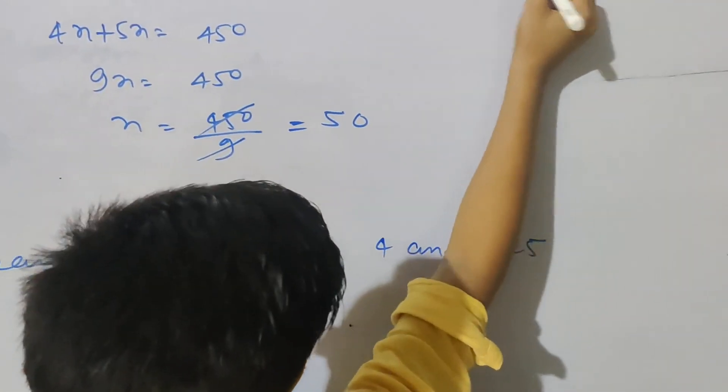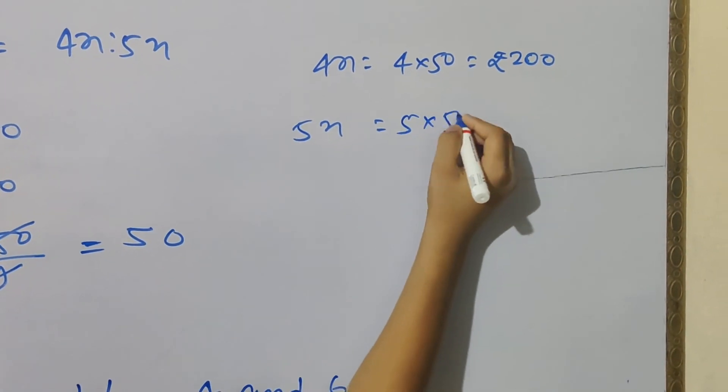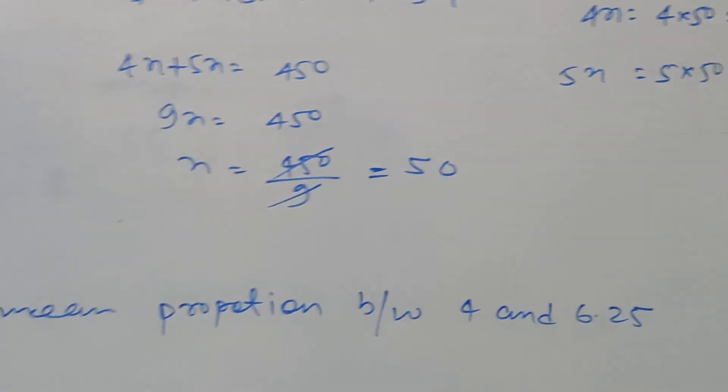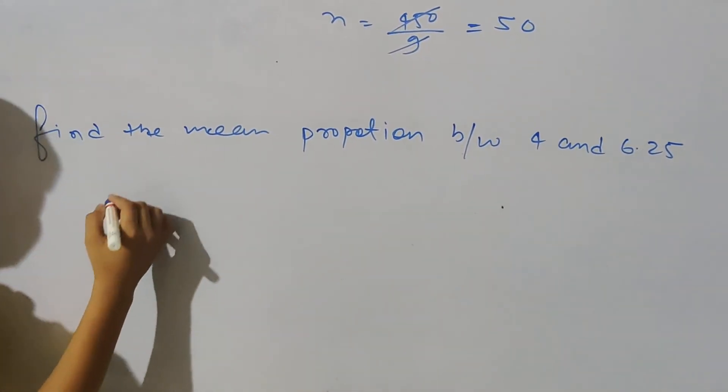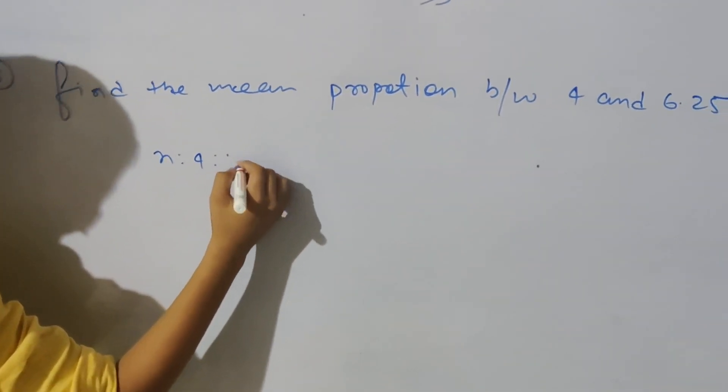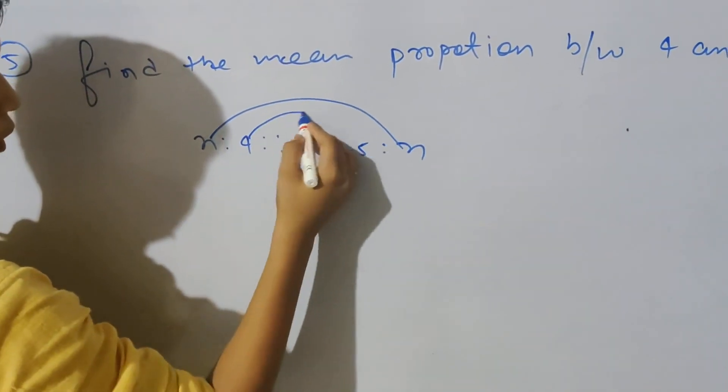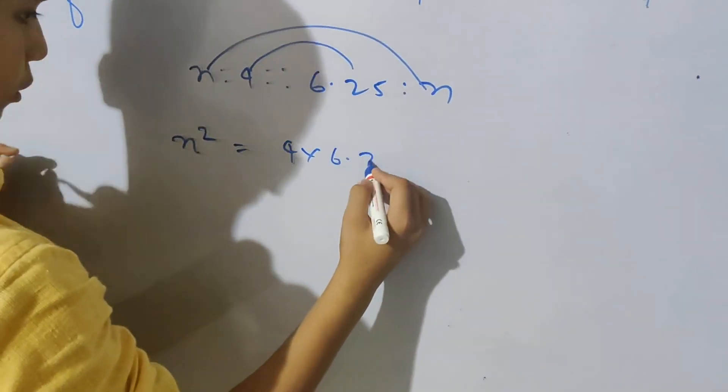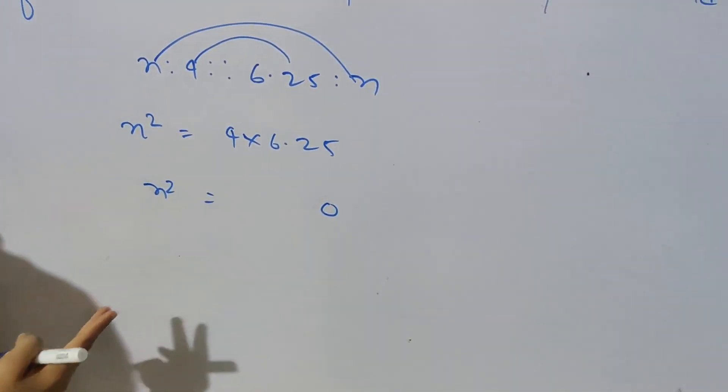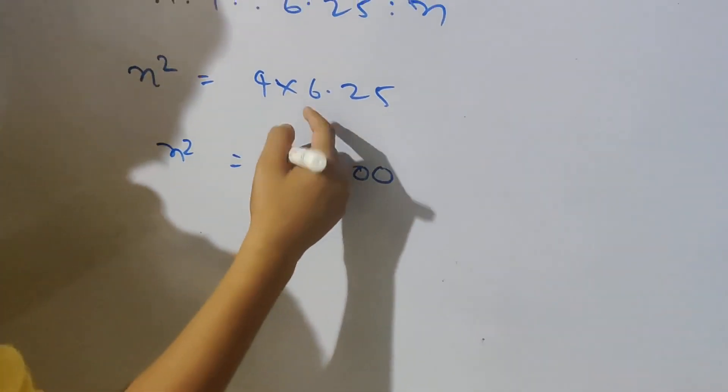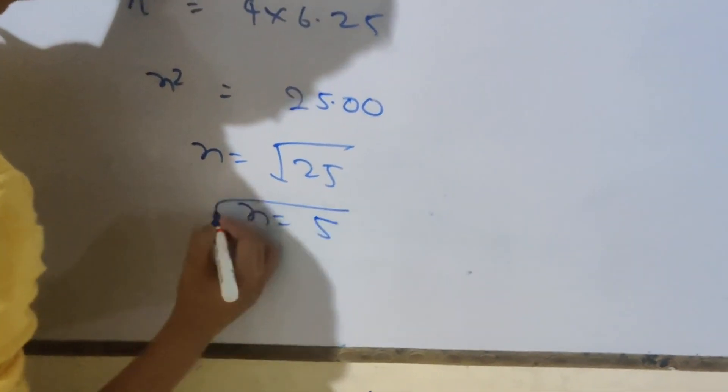So x equals 50. Therefore 4x equals 4 times 50, which is rupees 200. And 5x equals 5 times 50, which is rupees 250.